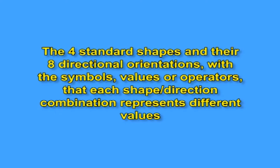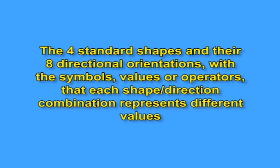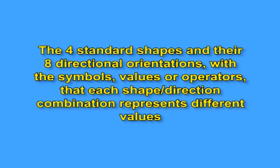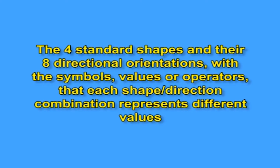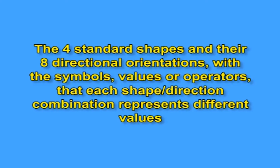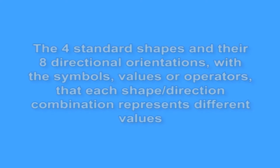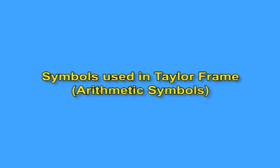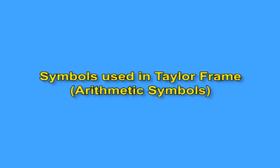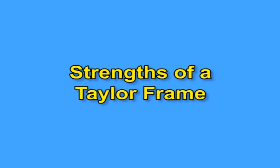The four standard shapes and their eight directional orientations represent different symbols, values, or operators. For Taylor frame arithmetic symbols, the algebraic symbols include the two flatter-type and triangle-shaped pegs, which also have 16 positions.